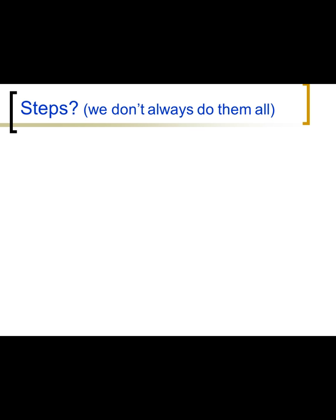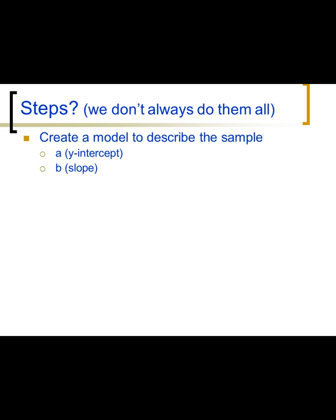Regression is like a toolbox — sometimes you pull out one tool, sometimes another. It always involves creating a model to describe the sample. Since it's a straight line, mathematically you only need two things to describe it: a y-intercept and a slope. We call those a and b.